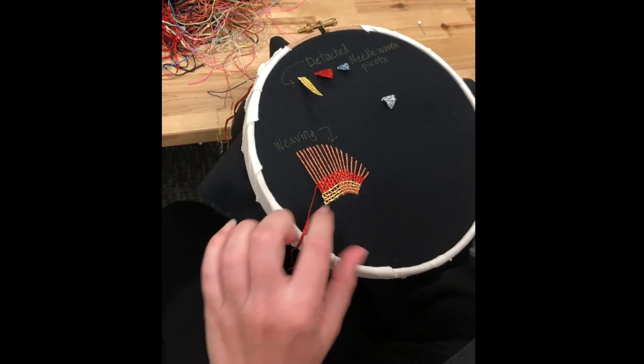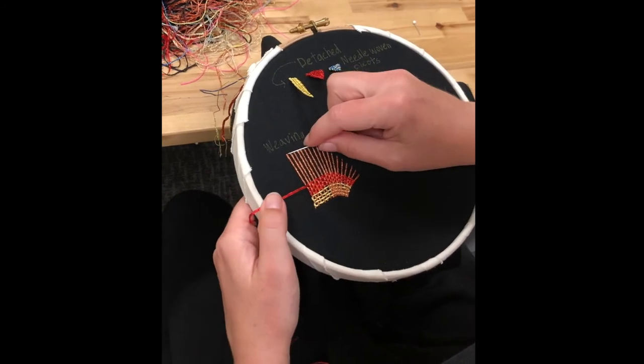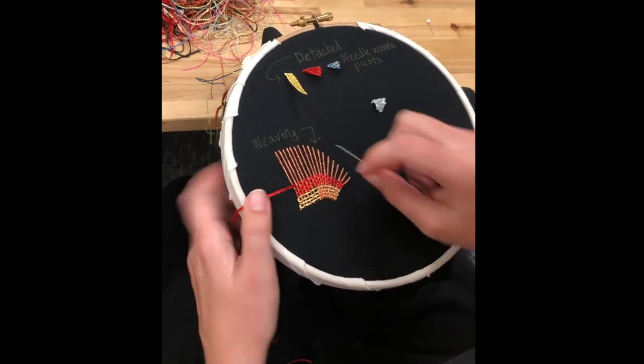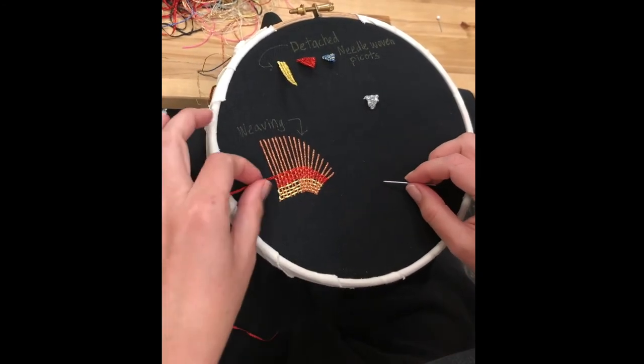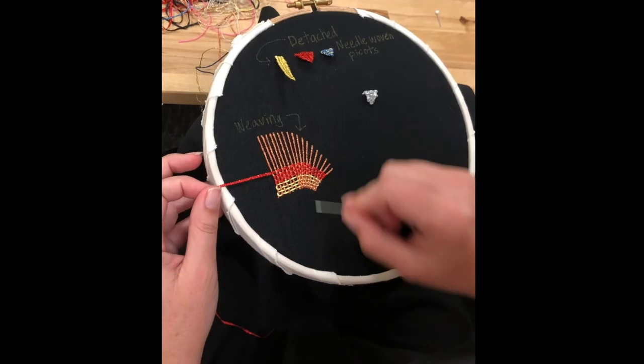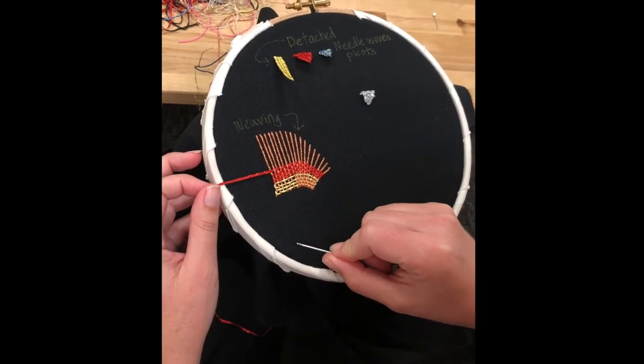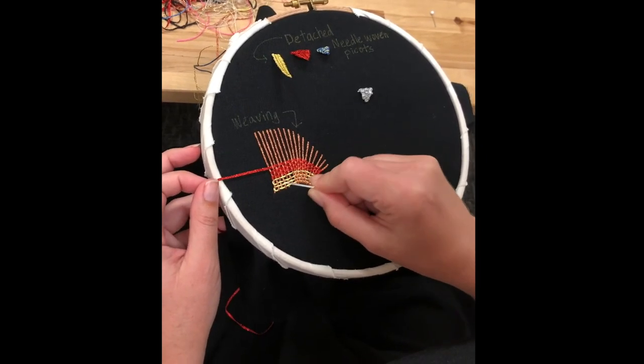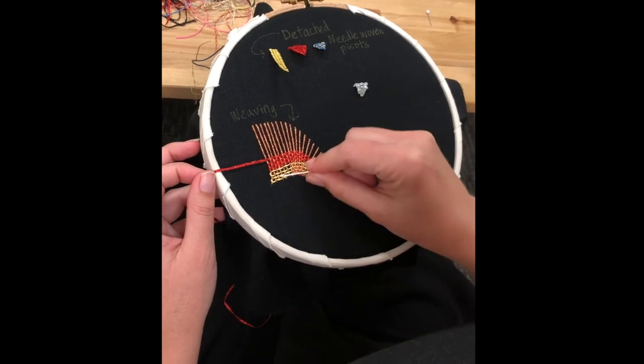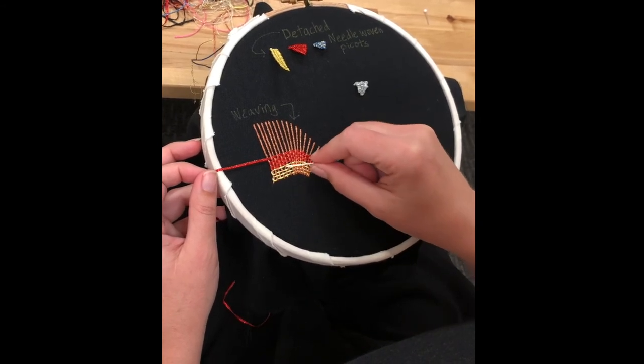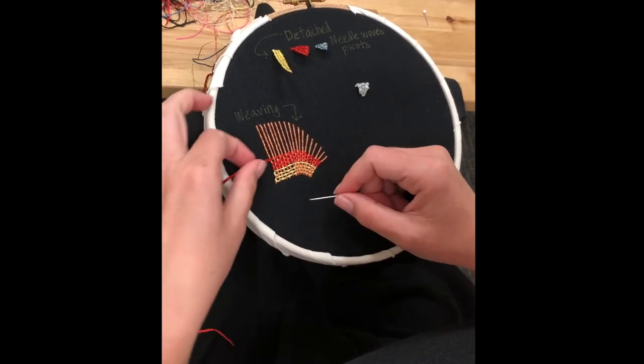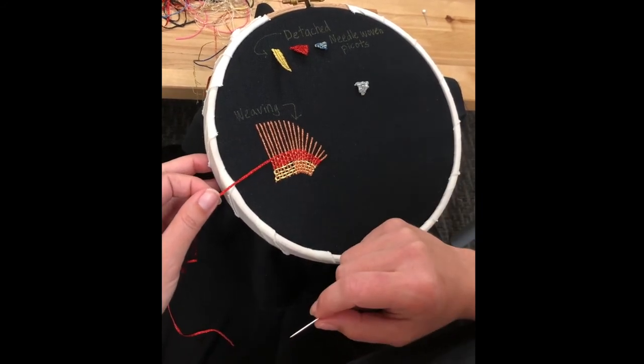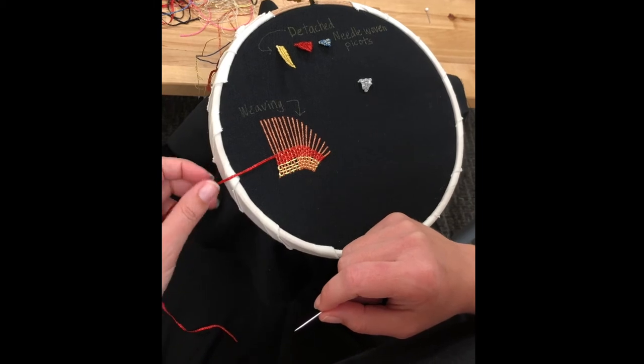And then over here I have a little weaving sample, and all I did for this was I made, it started out as a grid, and then I kind of started to curve this off to the side just for something different. And I have two different examples of threads that have been woven through here. I have this one that's a little bit more of a rounded cord, and I left that a little bit more open so you can see there's space in there. And then this one is a nice flat thread, and so I've woven that through here, and it looks a little bit different depending on which thread you're using.